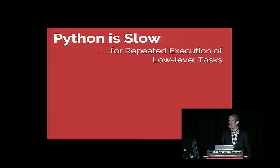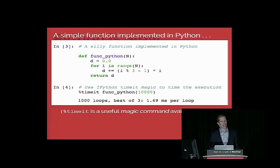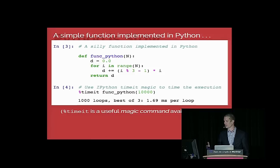On the other hand, Python is slow — especially slow for repeated execution of low-level tasks. If we write a simple function in Python that loops n times and updates a variable with a couple of operations, using the timeit magic function available in IPython, we find that for a loop of 10,000 iterations, this executes in 1.69 milliseconds.